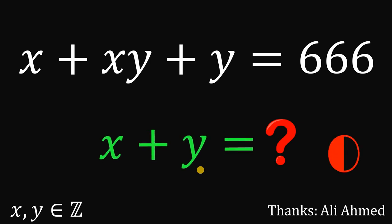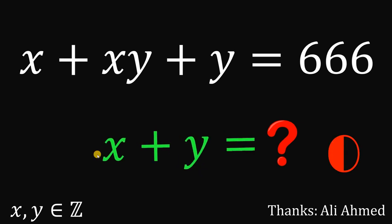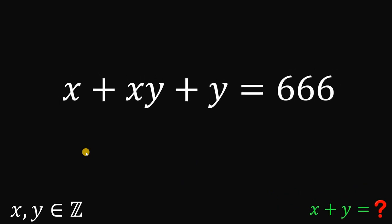And now, let's answer this question together. Alright, so given this equation, x plus xy plus y equals 666, wherein x and y are both integers, then our goal is to solve for all possible values of x plus y.